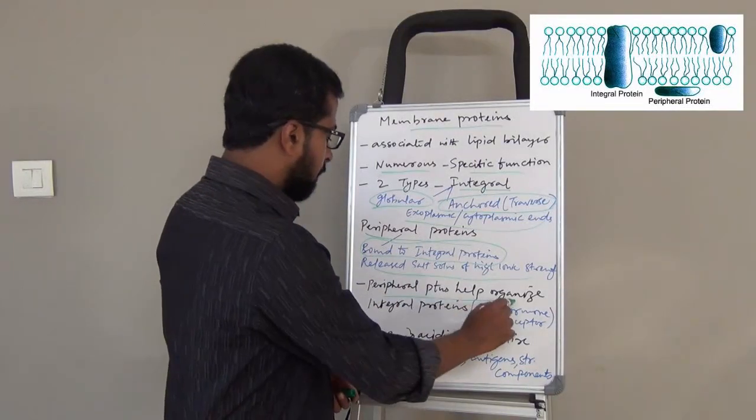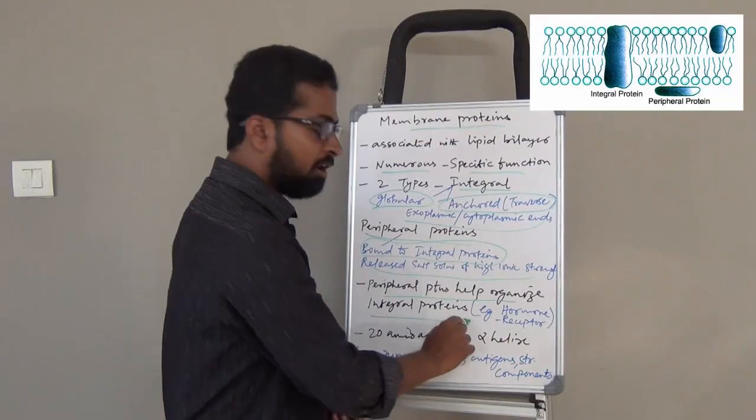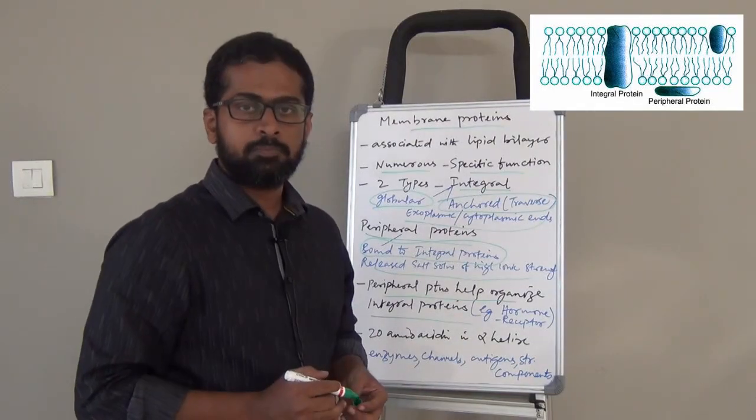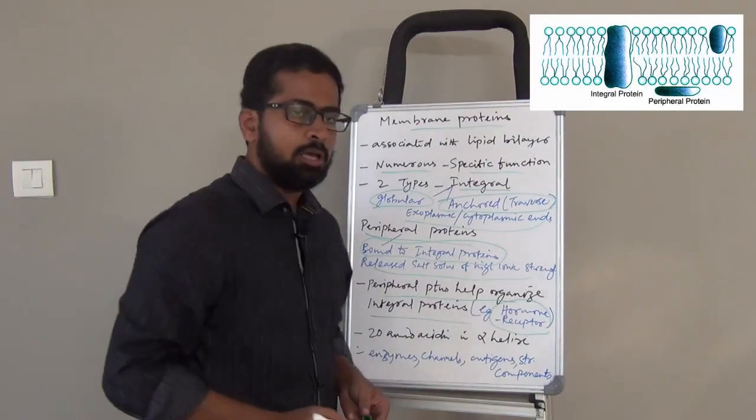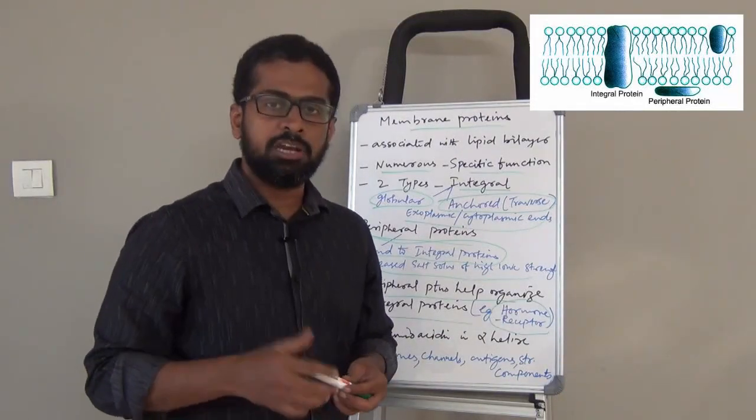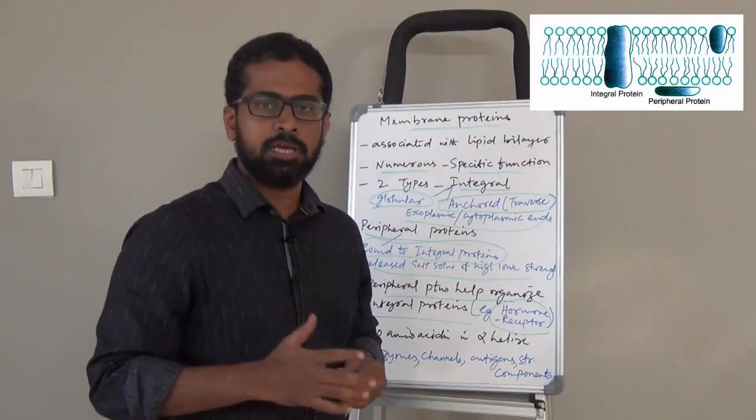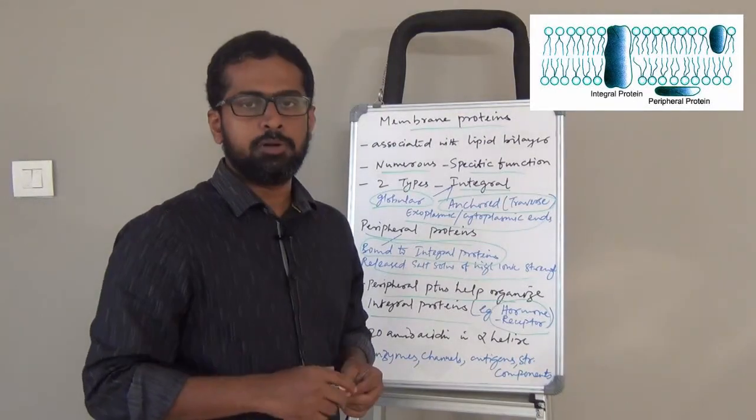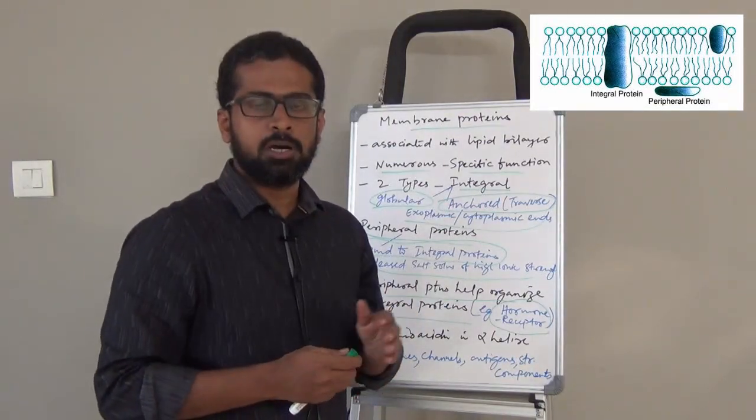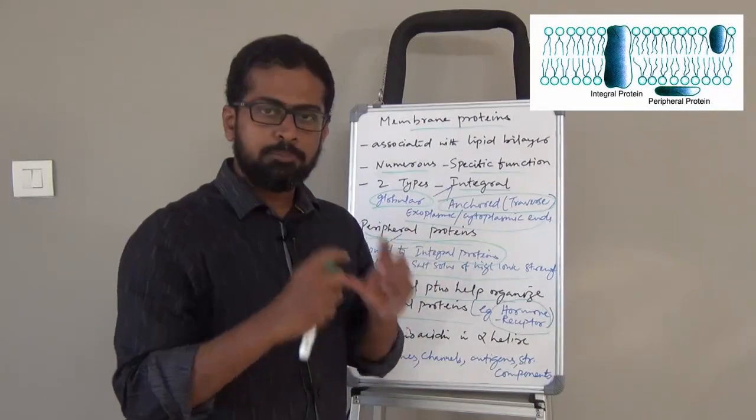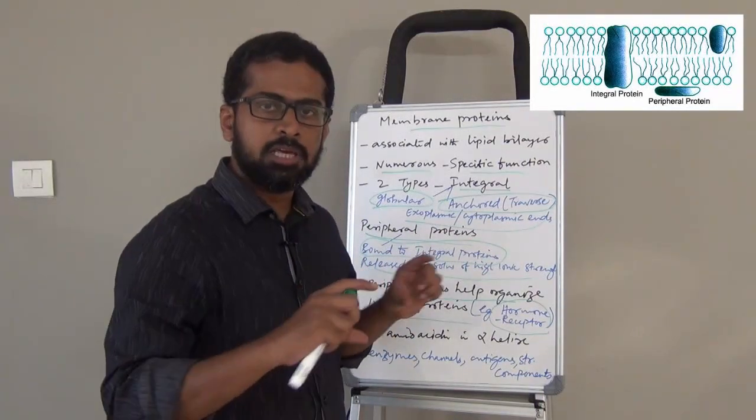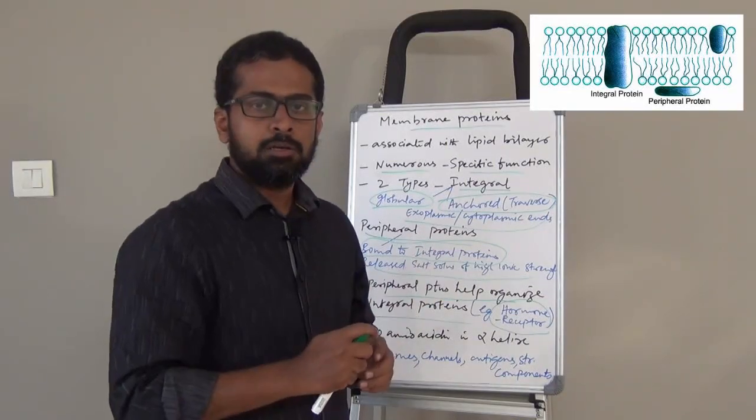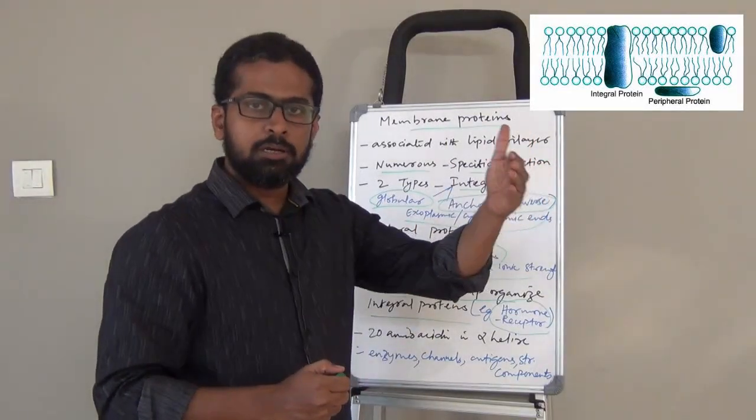Peripheral proteins help organize the distribution of integral proteins. For example, a hormone can play the role of a peripheral protein, whereas a receptor can play the role of an integral protein. When a hormone binds to the receptor, the hormone helps the receptor organize in the plane of the membrane.